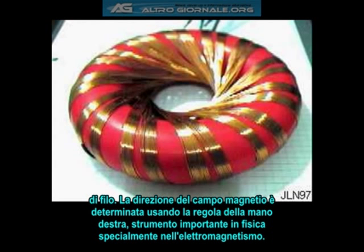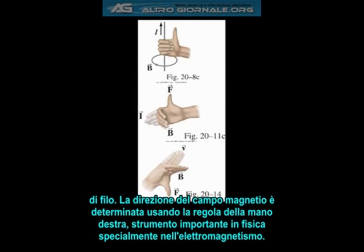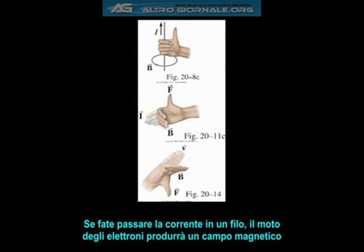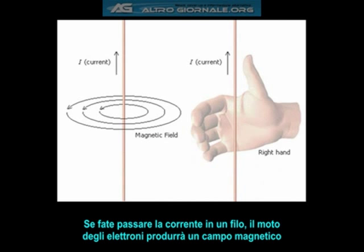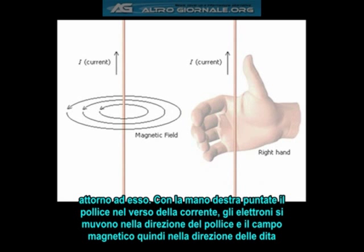The direction of the magnetic field is determined by using the right-hand rule, a very important tool in physics and especially electromagnetism. If you run current through a wire, the motion of the electrons passing through it will produce a magnetic field around the wire. Take your right hand, point your thumb in the direction of the current, and the electrons produce a magnetic field in the direction your fingers curl.